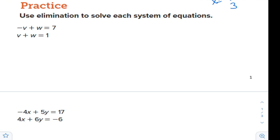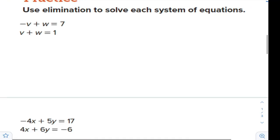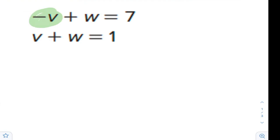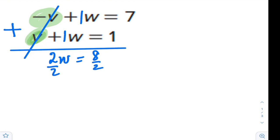Use elimination to solve each system of equations. Even if you are not asked to eliminate here, it is very obvious that we can eliminate the variable v. This is negative v and this is positive v. They have different signs, they are opposites. So you will add to eliminate the v. If you add, you get rid of the v, and you will add 1w plus 1w is 2w, 7 plus 1 is 8. And now you can divide to solve for w.